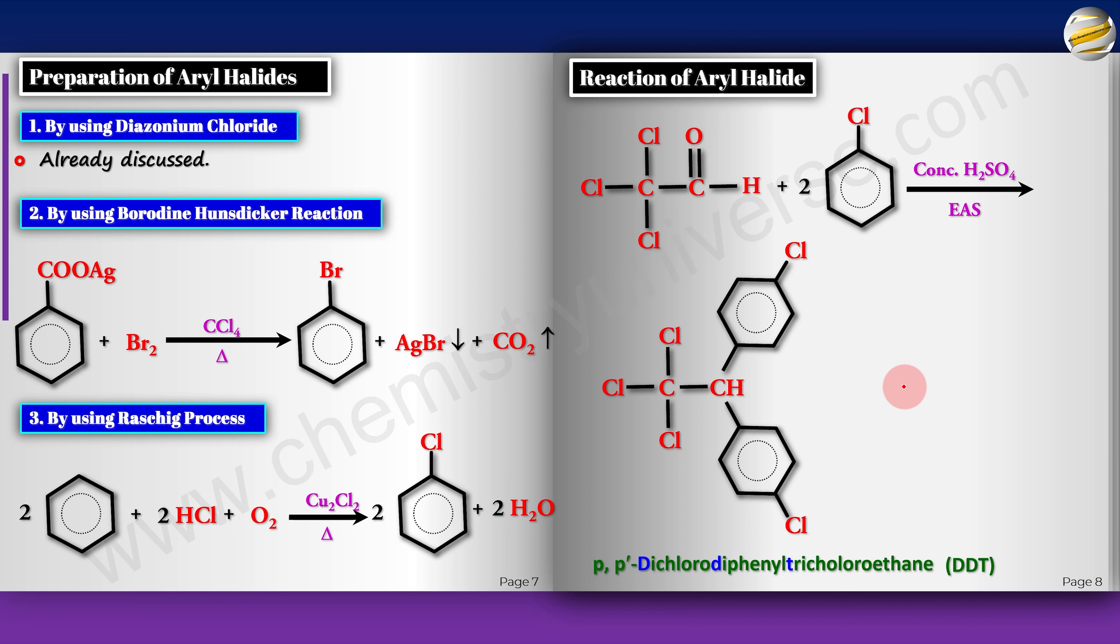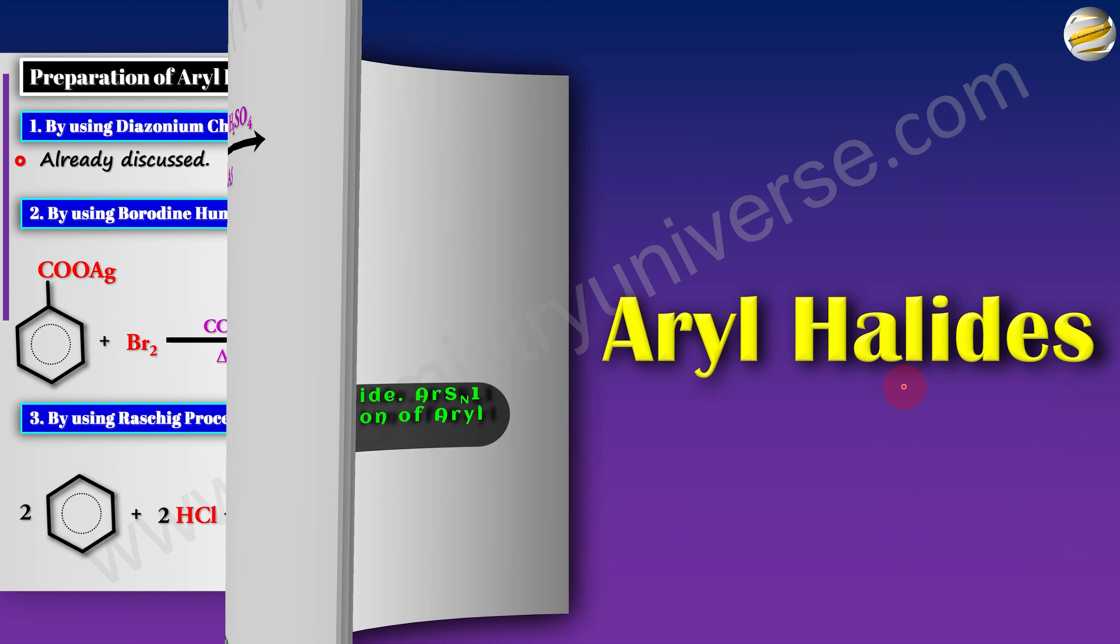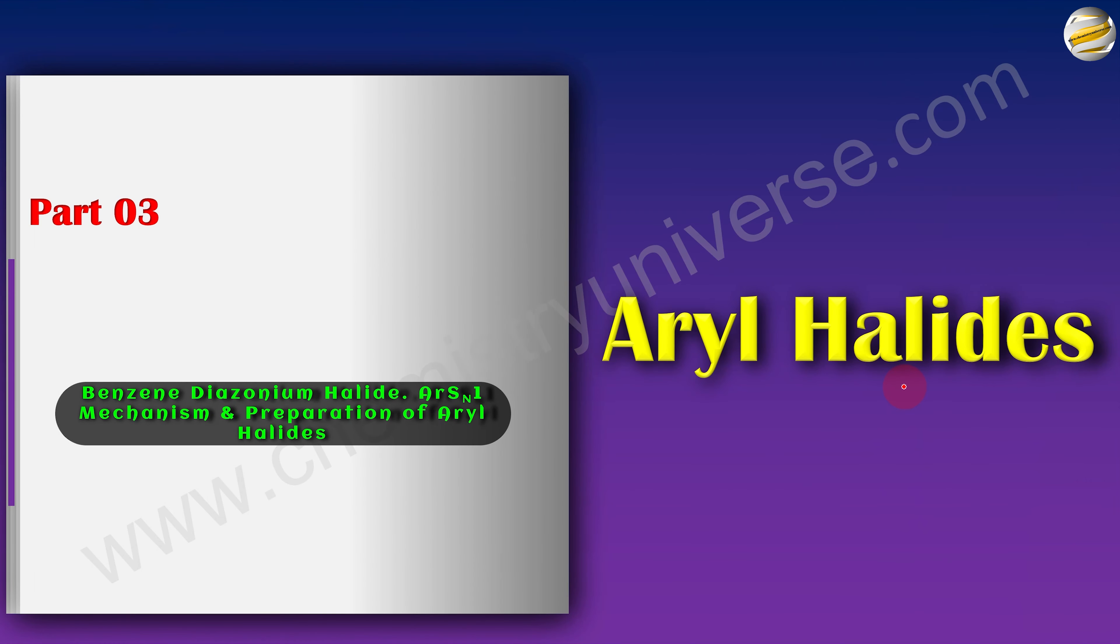As this is a short video, this is where we are at. We have now completed aryl halides. That's good news. We have done ARSN2, benzyne, and ARSN1. In the next video, we will be starting another new topic. We are going to start hydrocarbons. The first of the hydrocarbons that we do is alkanes.